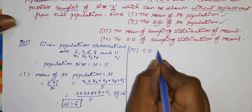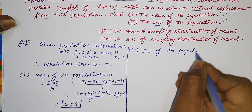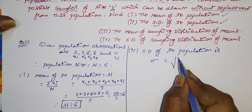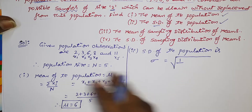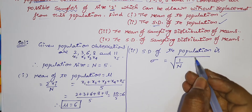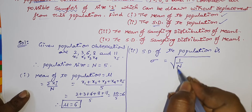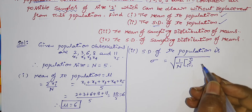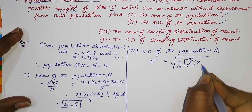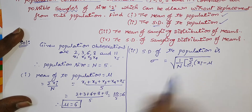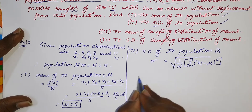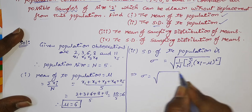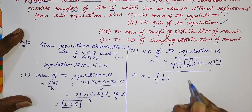Now we find the standard deviation of the population, represented by sigma. The formula is: sigma = square root of (1/N) times the sum of (xi minus mu) squared. So sigma = root over (1/5) times the sum of squared deviations of each observation from the mean.